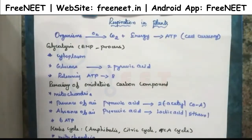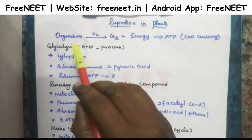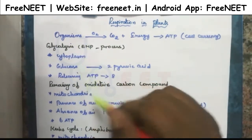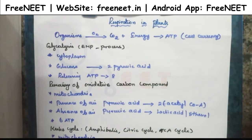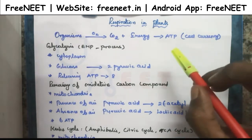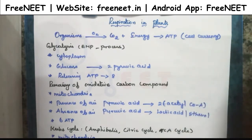We are going to see about respirations in plants. Before going to see the NEET questions, we should know about some key points about respiration. First, we should know what is meant by respiration: organisms intake oxygen, kill agents, and release carbon dioxide as well as energy. That process is called respiration. The organism releases energy in the form of ATP. ATP is also called the cell currency.